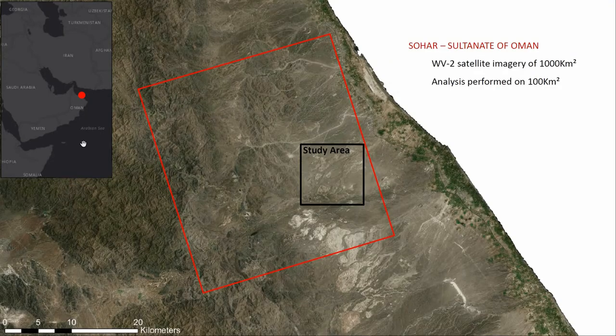The area that I investigated for my master thesis is in the area of Soha, in the southeastern part of Oman, in the southeastern part of the Arabian Peninsula. I had satellite images for 1,000 square kilometers, but I used only 100 square kilometers for my thesis.